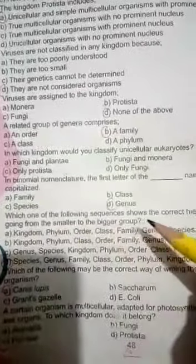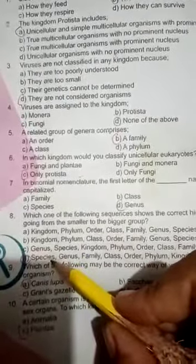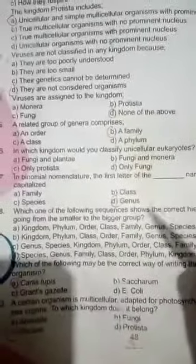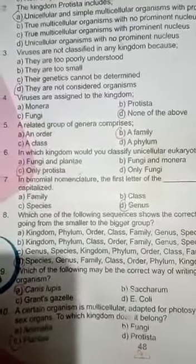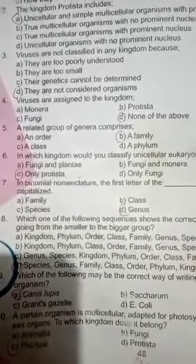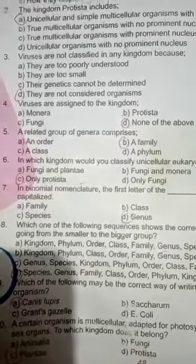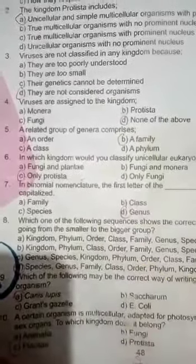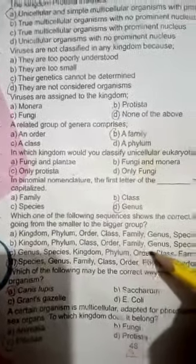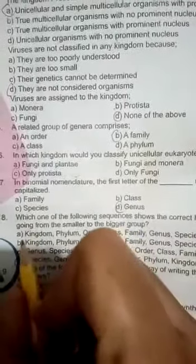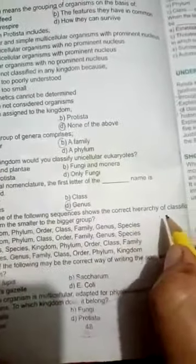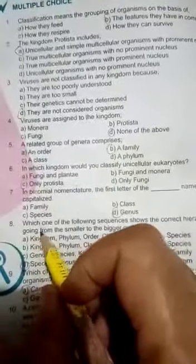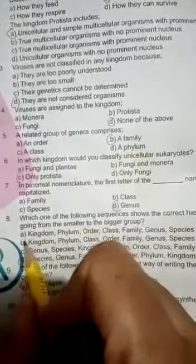Which one of the following sequences shows the correct hierarchy of classification? The correct hierarchy goes from smaller to bigger. If we go from bigger to smaller, the first answer is B.